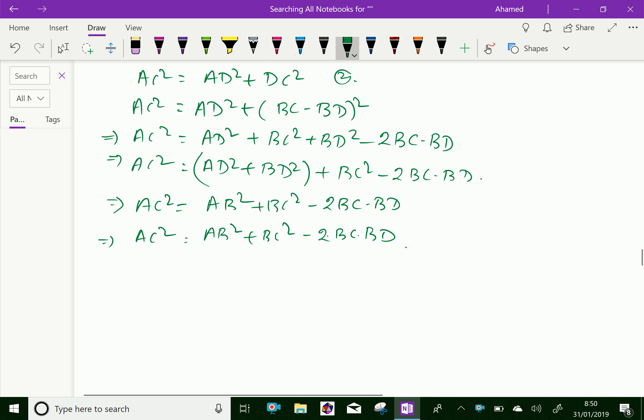Hence, we can say AC² = AB² + BC² - 2BC·BD. Hence proved.